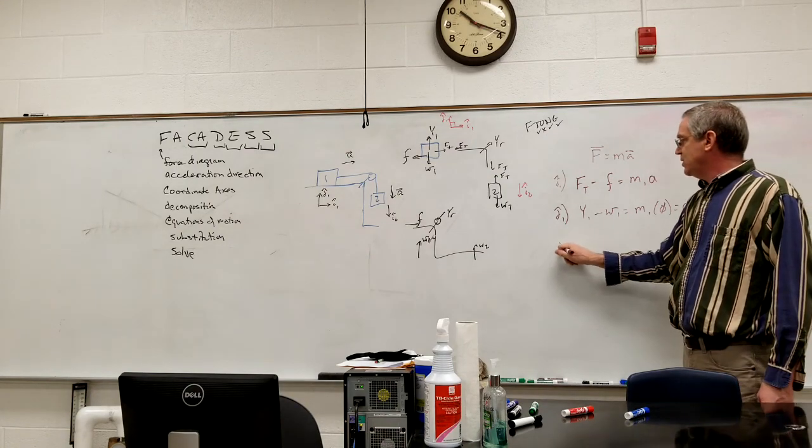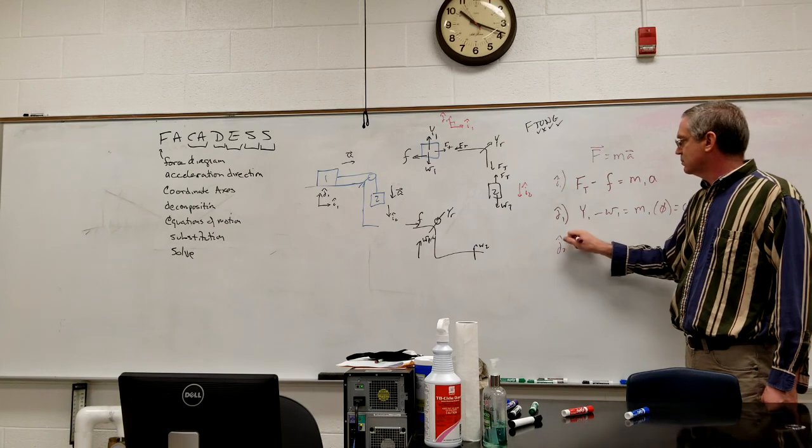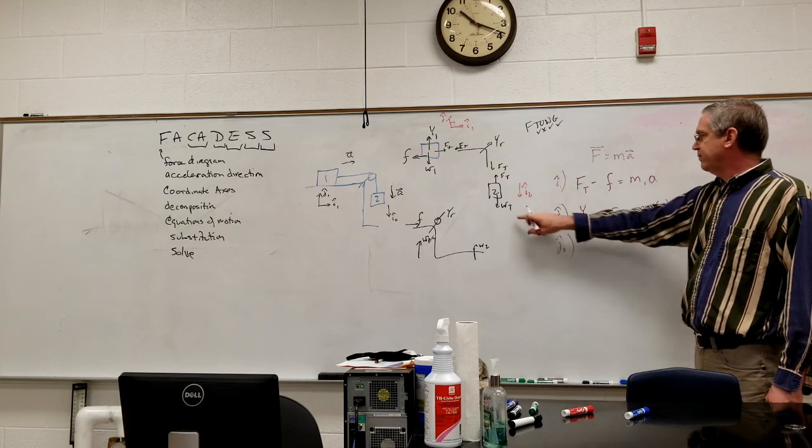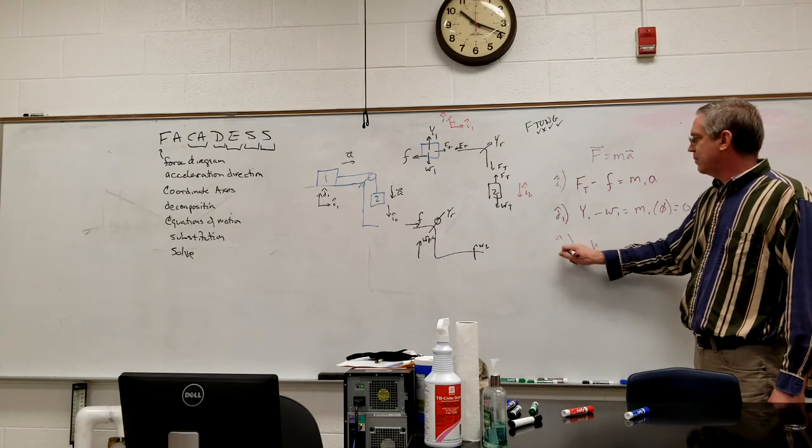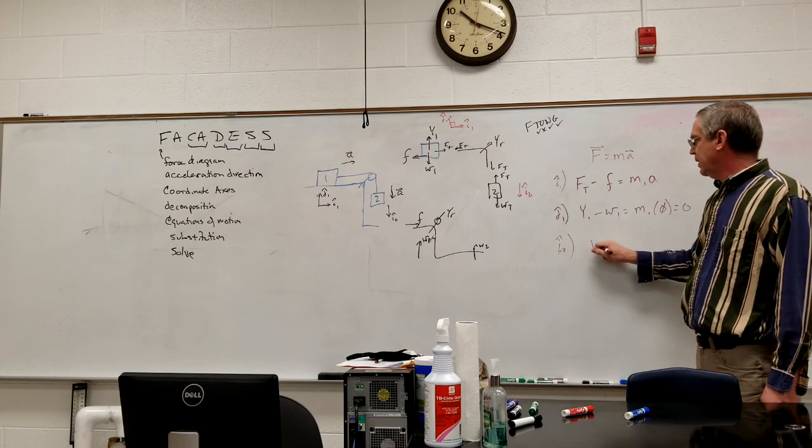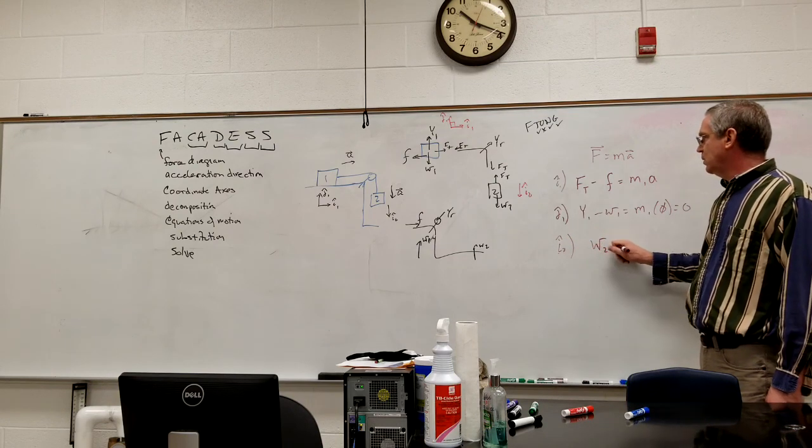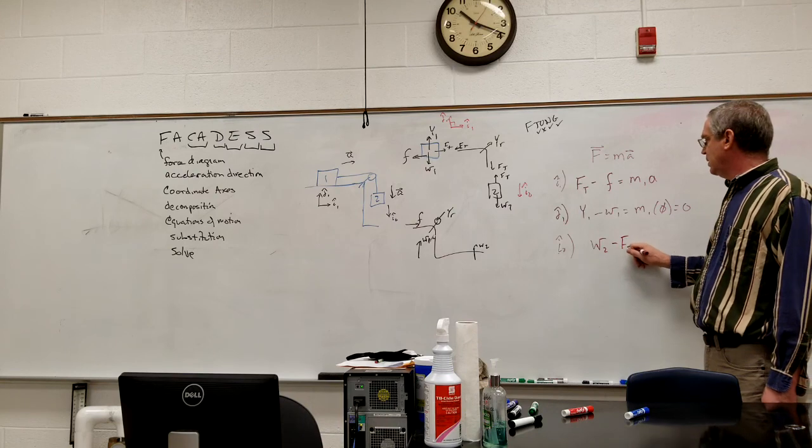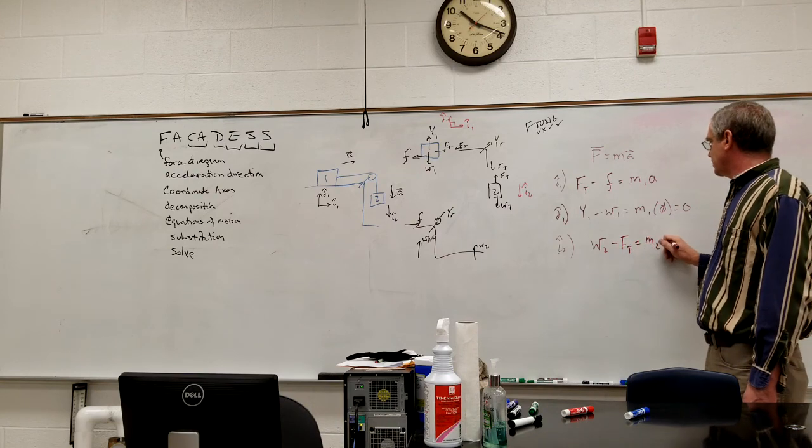And then my J two equation, I have, I said down was positive, so I have, oops, my I two equation, I have W two minus tension is equal to mass two times acceleration.